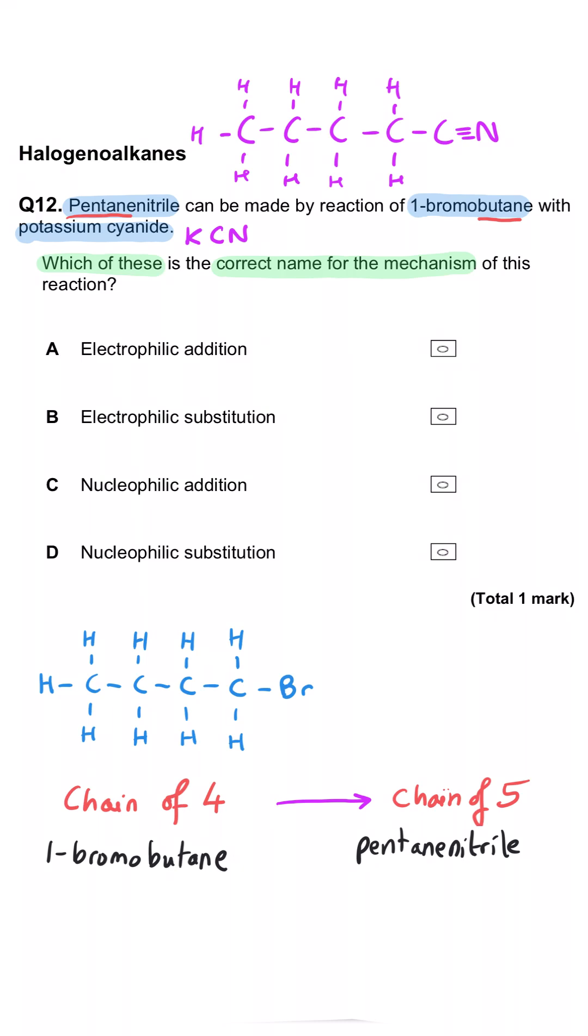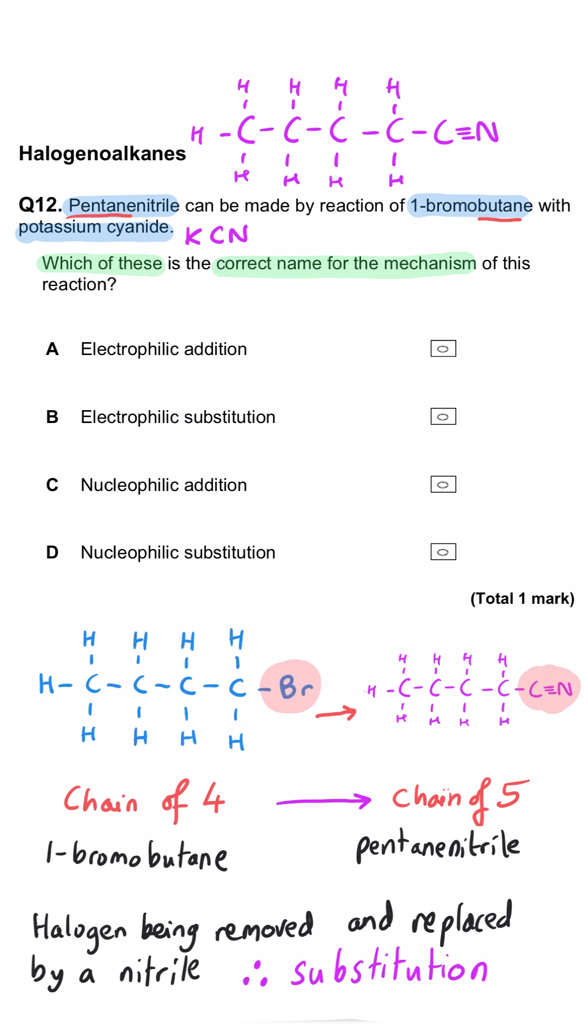We've got a halogen at the beginning, the bromo, and we don't have it at the end so it's being removed. We're introducing a nitrile functional group to the molecule, so that means we're substituting our halogen for the nitrile. This is going to be nucleophilic substitution.